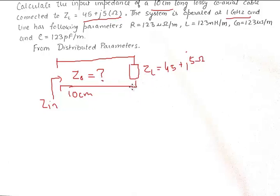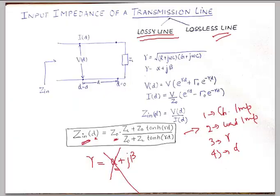If you look closely, gamma — the propagation constant — is also not given, and neither is beta. All of these things will have to be calculated, because from our previous discussion on the input impedance of a lossy line, we saw that it depends upon gamma and Z naught. So these two missing parameters need to be calculated first.